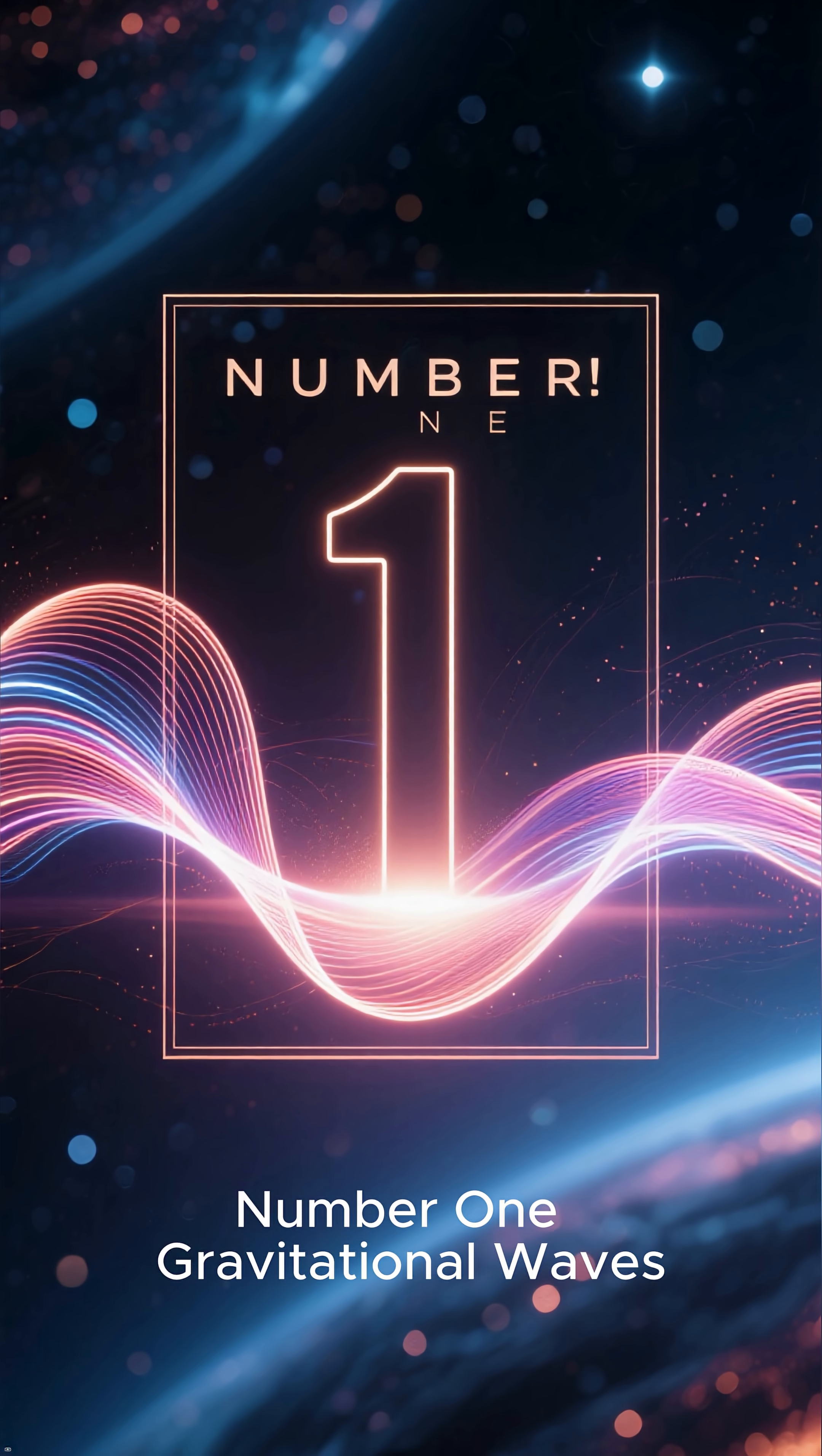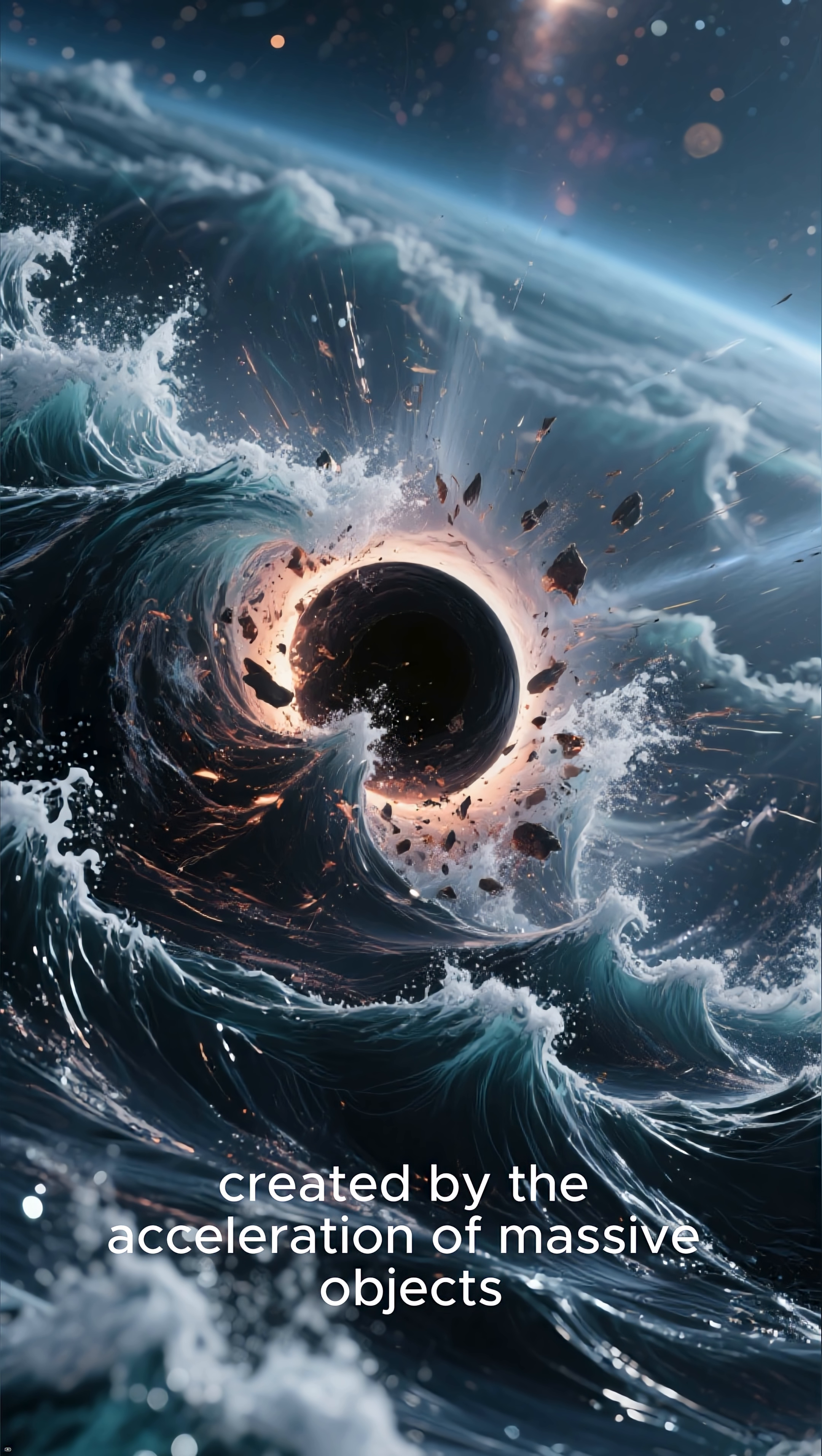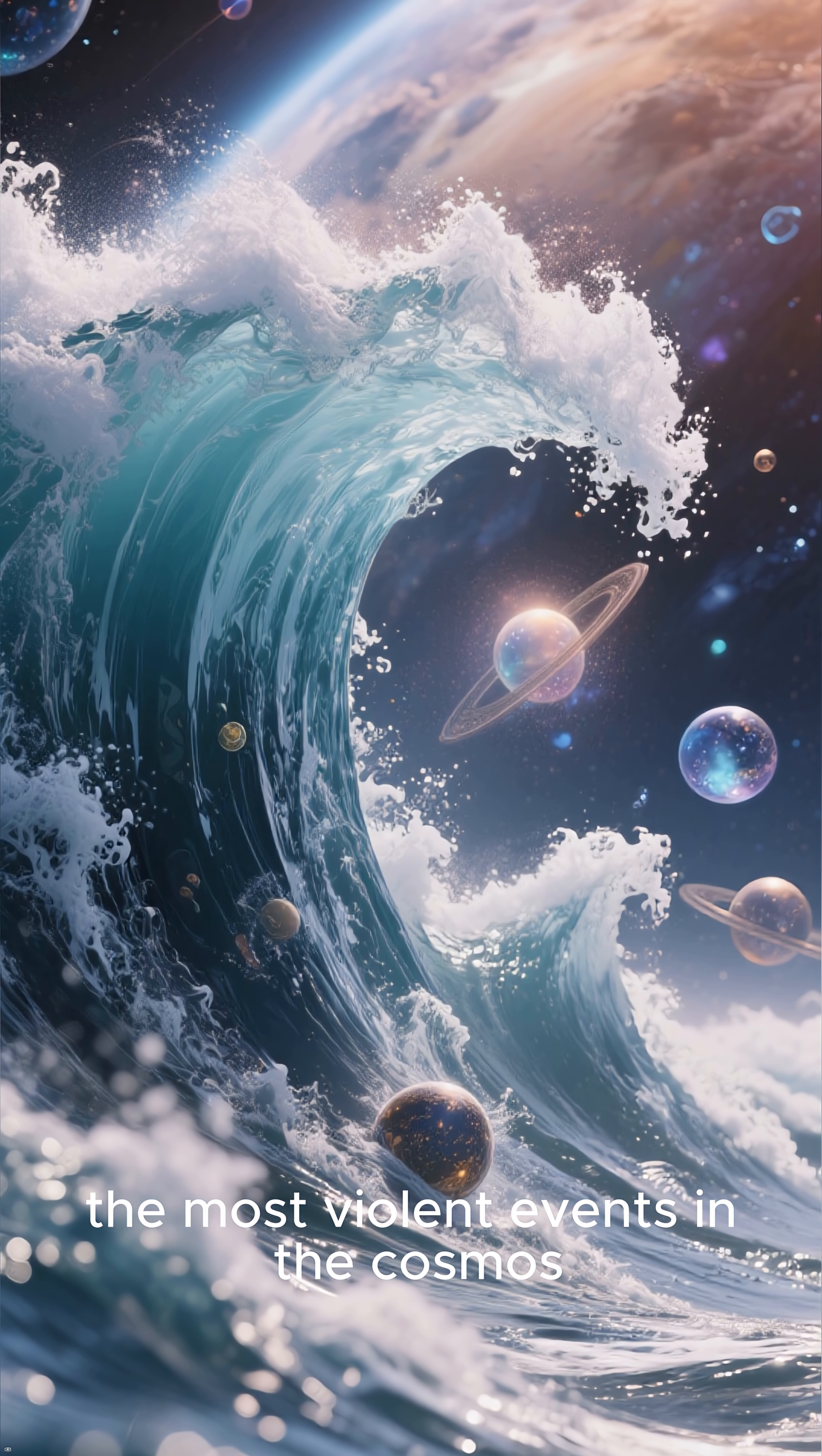Number one: Gravitational waves. Finally, the most dynamic and profound warping of space-time: gravitational waves. These are ripples in space-time itself, created by the acceleration of massive objects, like merging black holes. These waves stretch and compress the fabric of the universe as they pass, a direct and measurable confirmation of Einstein's theory and a new way to hear the most violent events in the cosmos.